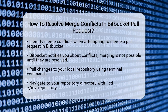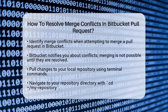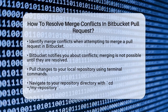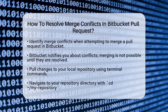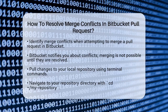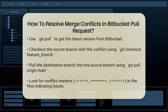To start resolving the conflict, you need to pull the changes to your local repository. Open your terminal and navigate to your repository directory. For example, if your repository is named MyRepository, you would use the command cd ~/MyRepository. Next, pull the most recent version of the repository from Bitbucket using git pull.